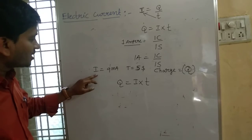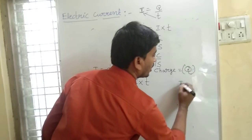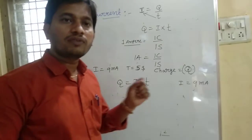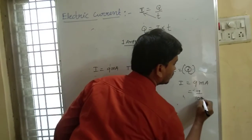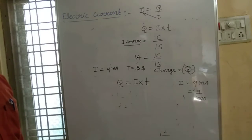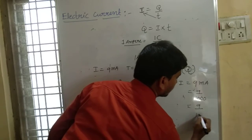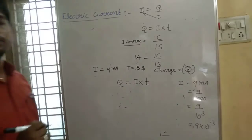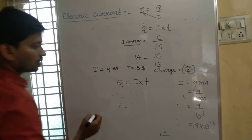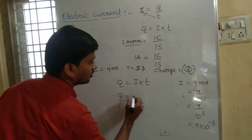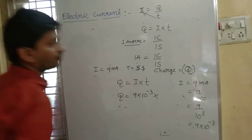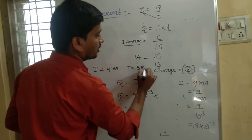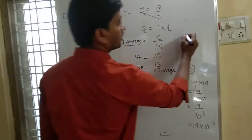Current I is 9 milliamperes. We convert to Amperes: 9 milliamperes equals 9 by 1000, which is 9 into 10 to the power of minus 3 Amperes. Time is 5 minutes. Since 1 minute equals 60 seconds, T equals 5 into 60, which is 300 seconds.